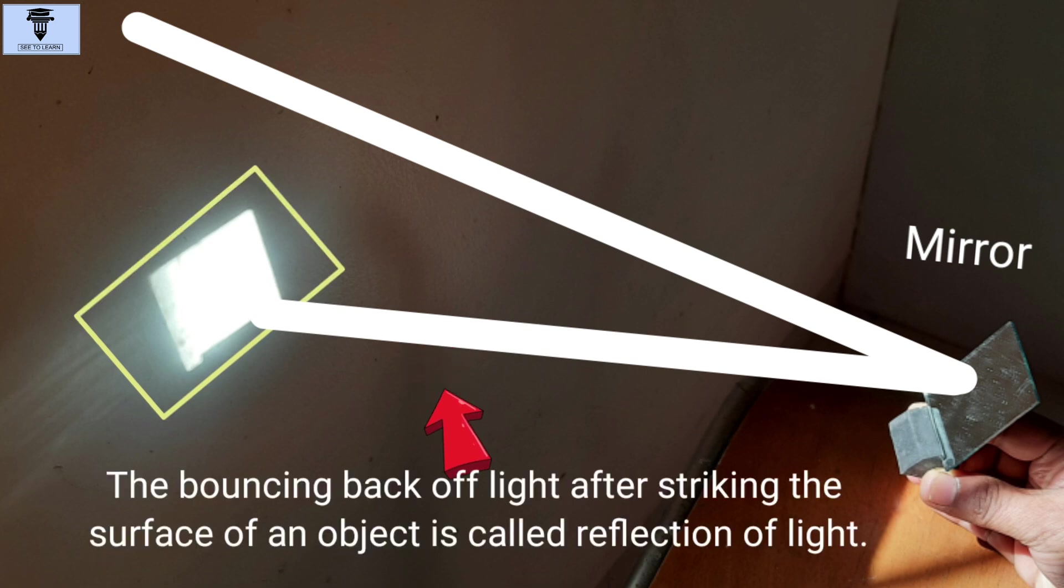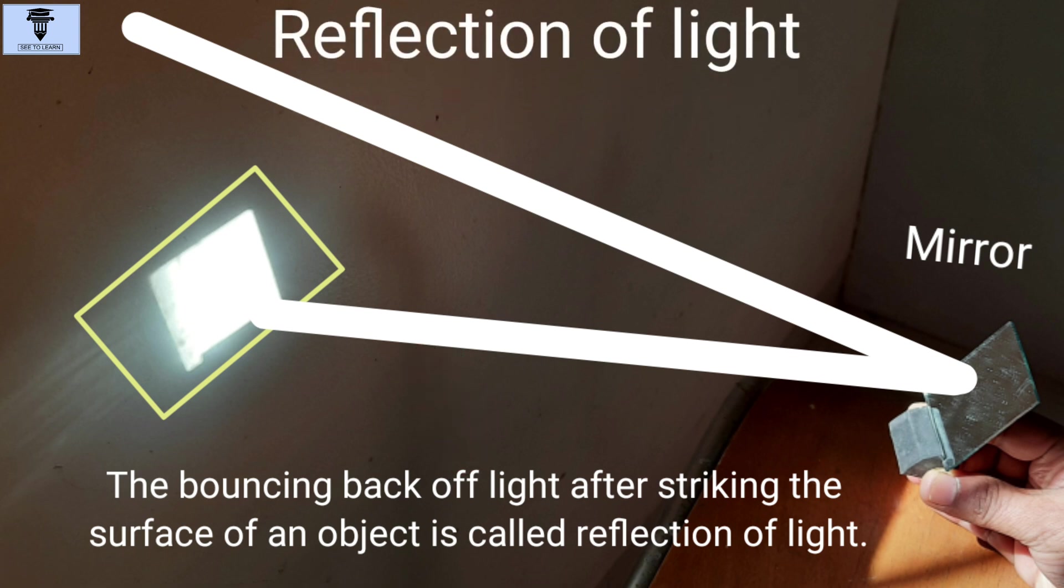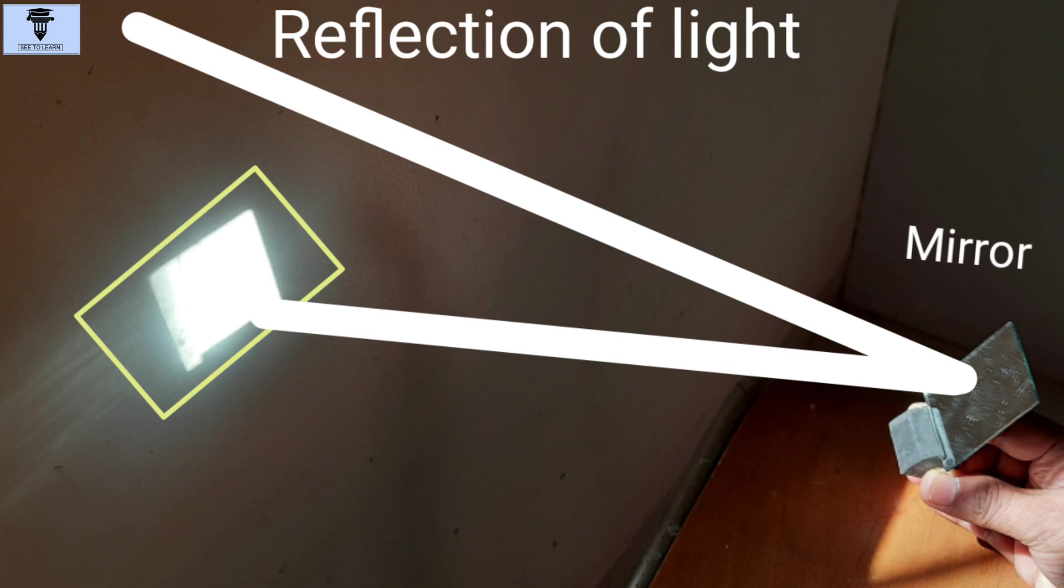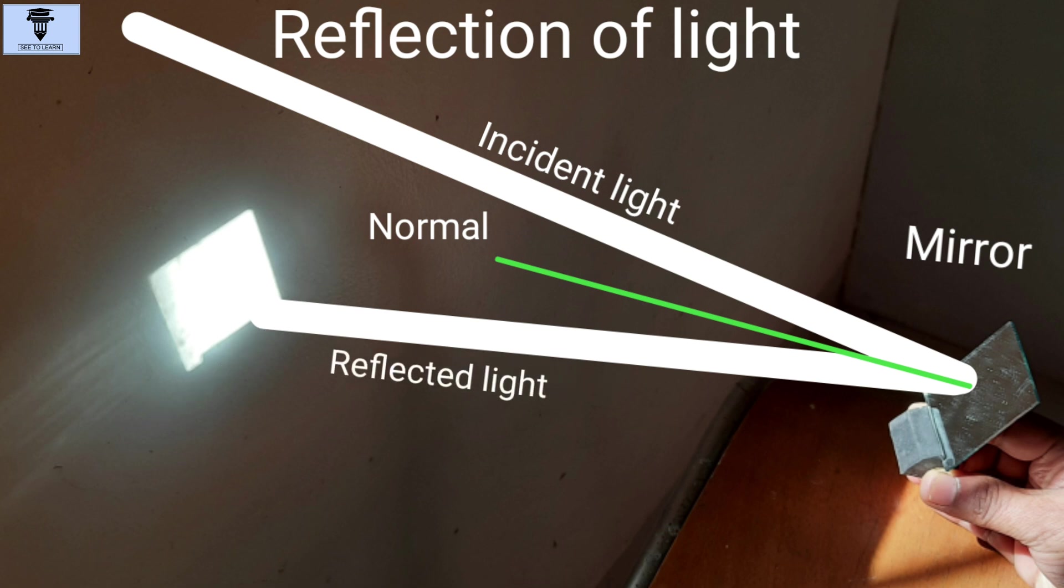This bouncing back of light after striking the surface of an object is called reflection of light. The light that falls on the mirror is called the incident light. A perpendicular at the point of incidence is called the normal. And the light that bounces off the mirror is the reflected light. We can see the reflected light on the wall.